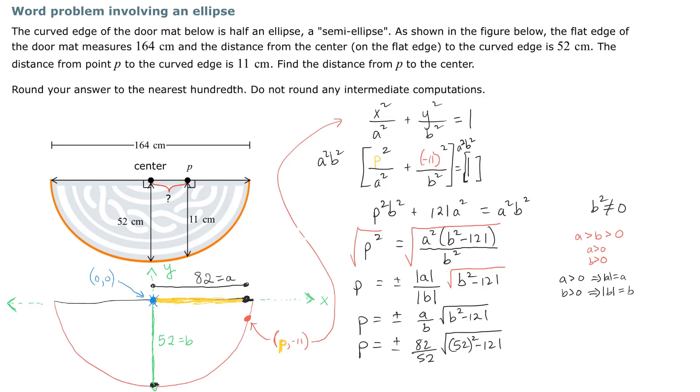You should get P here is equal to plus or minus 80 decimal 1, 4, 4, 3, 1. And of course, there's lots of decimal places after that. We're trying to round to the nearest hundredth. So why don't we look at the thousandth place? The thousandth place is a 4. So we're going to round this down to 14 hundredths.